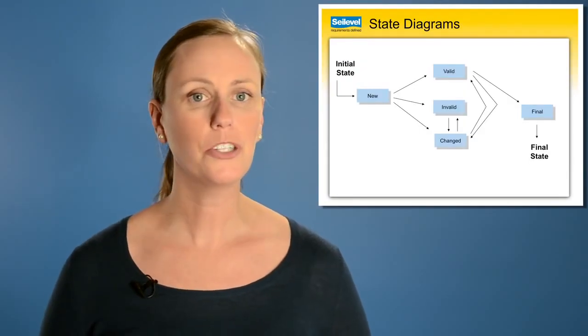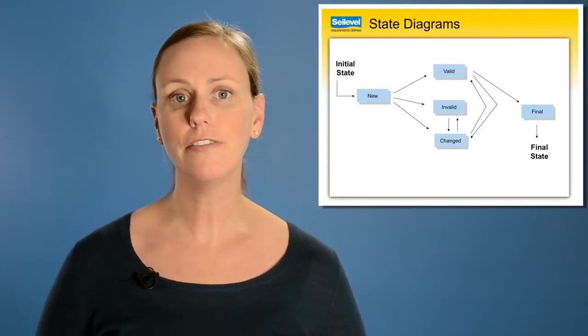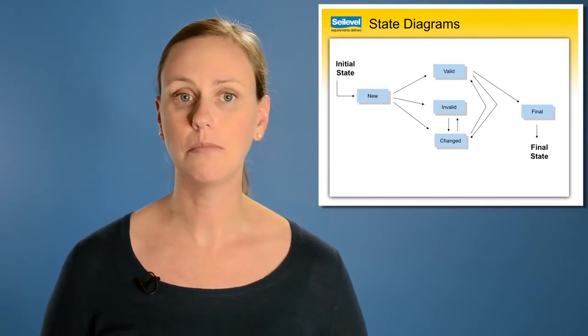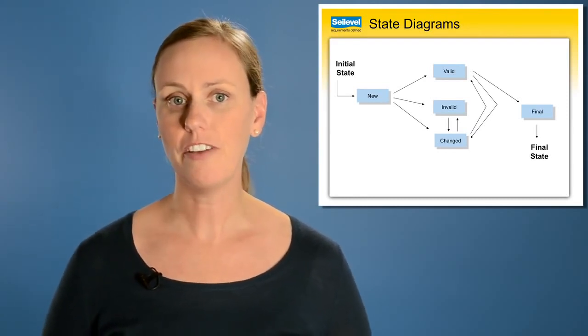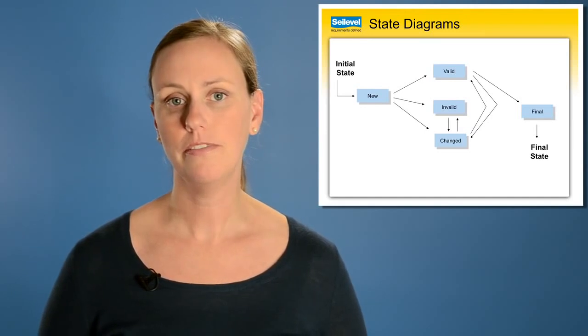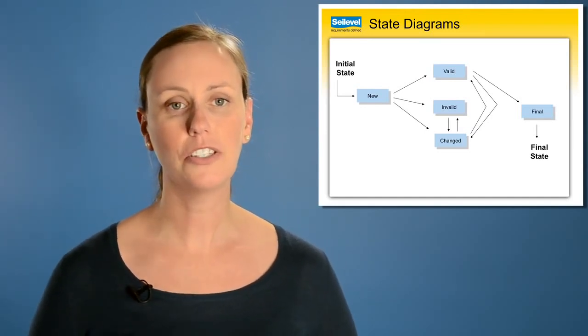In this state diagram, we are showing the possible states of a vehicle configuration that the users are creating. Vehicle configurations have five possible states: new, valid, invalid, changed, or final.